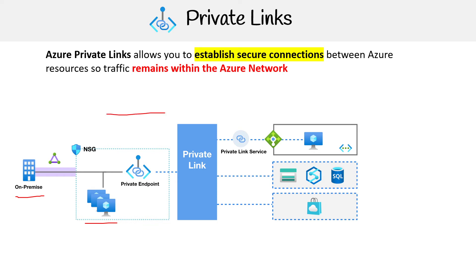The thing is, if you wanted to connect them, they might try to traverse the internet. So if you're on-prem, it's going out through the internet. The issue with this is that it's not necessarily secure. Another issue is it's just faster if it would stay within the actual network.